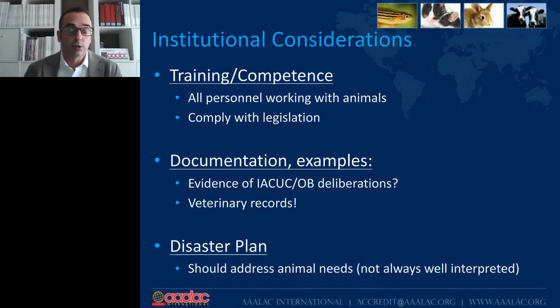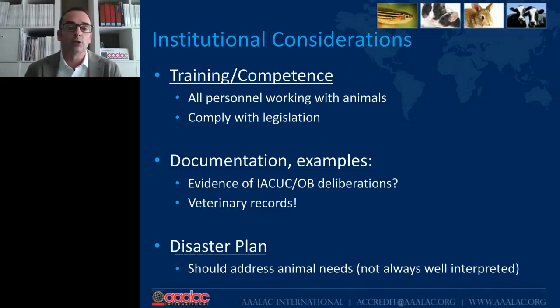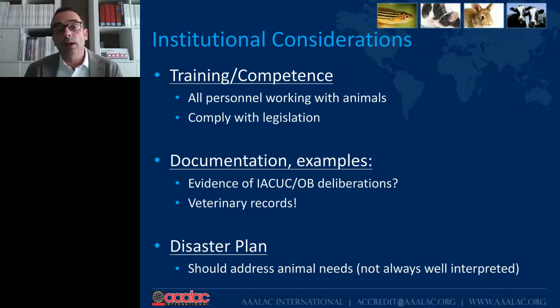Concerning the disaster plan, we will ask to see it at every institution. Sometimes we find that even though a disaster plan exists, it does not address the animal needs — which is not always well interpreted. We must design our disaster plan in a way that addresses animal needs, which may vary depending on the species we have or the type of disasters we may be anticipating. It is not the same situation if we are located in an area with potential hurricanes versus an area with potential snowstorms.